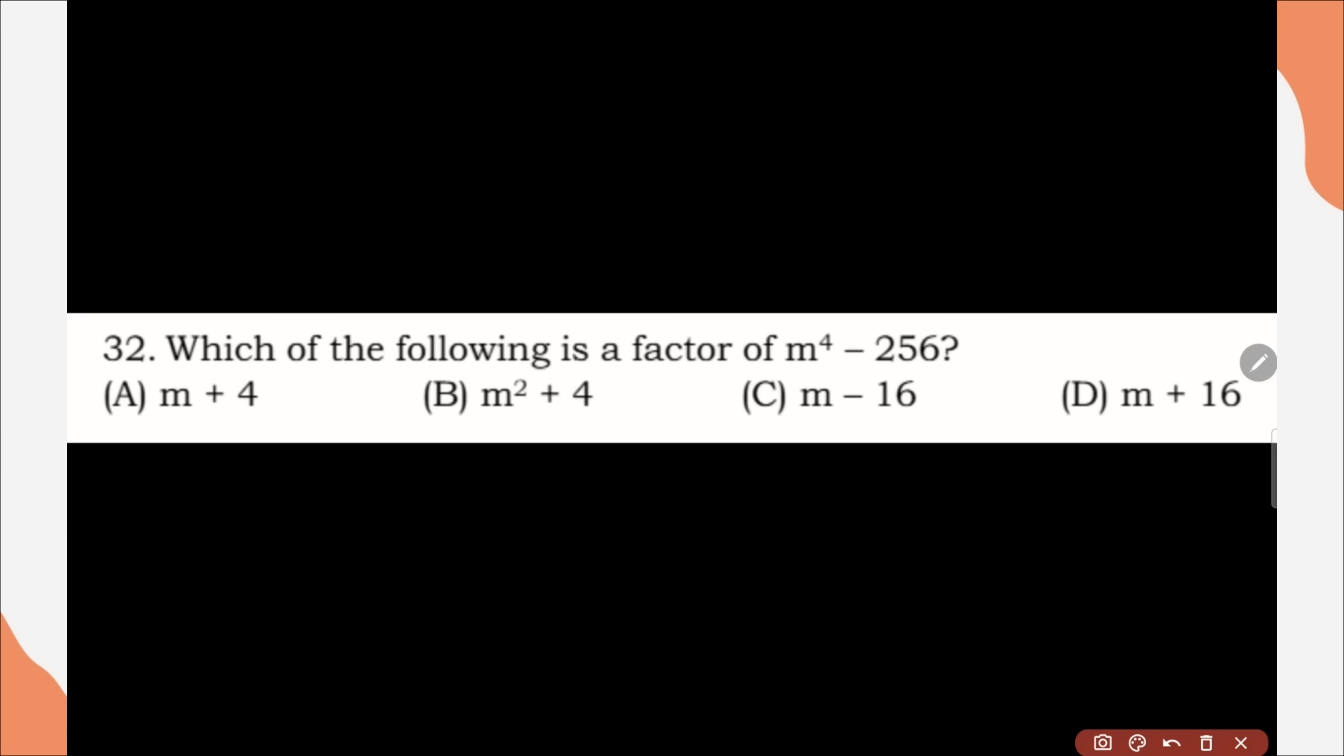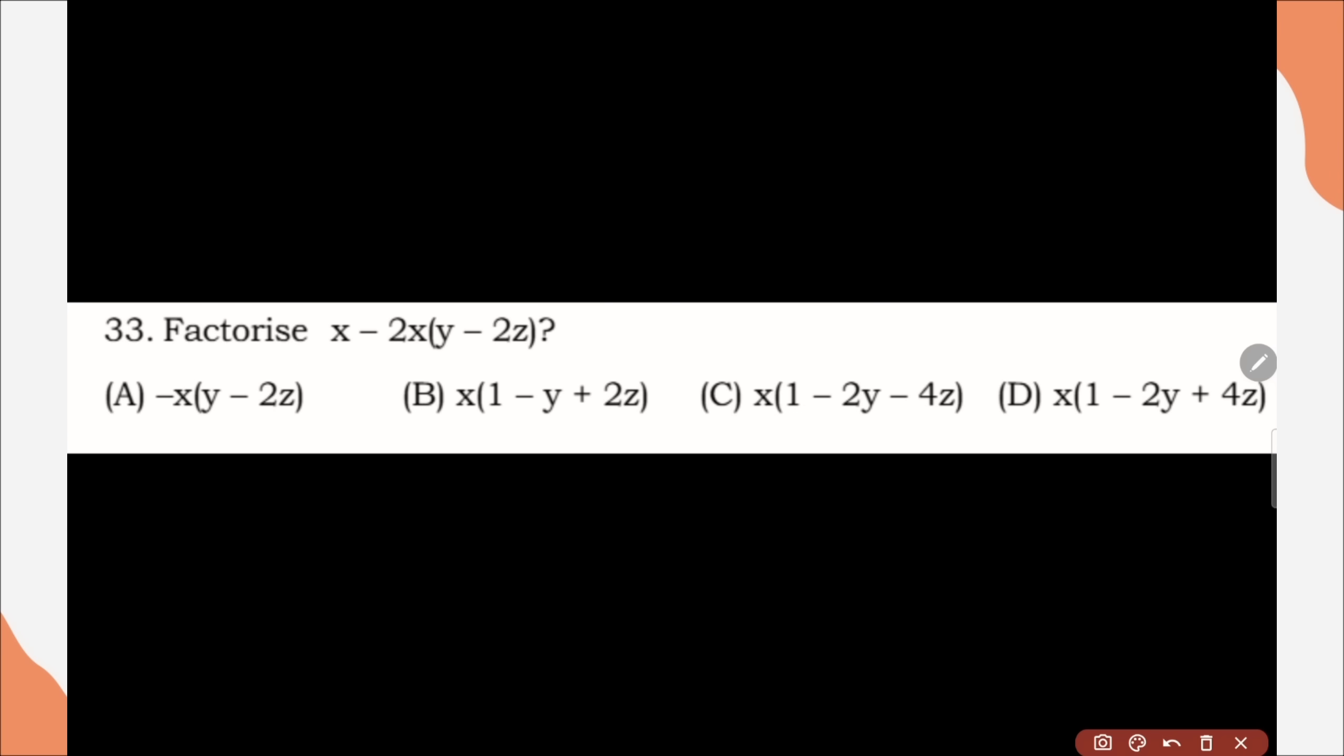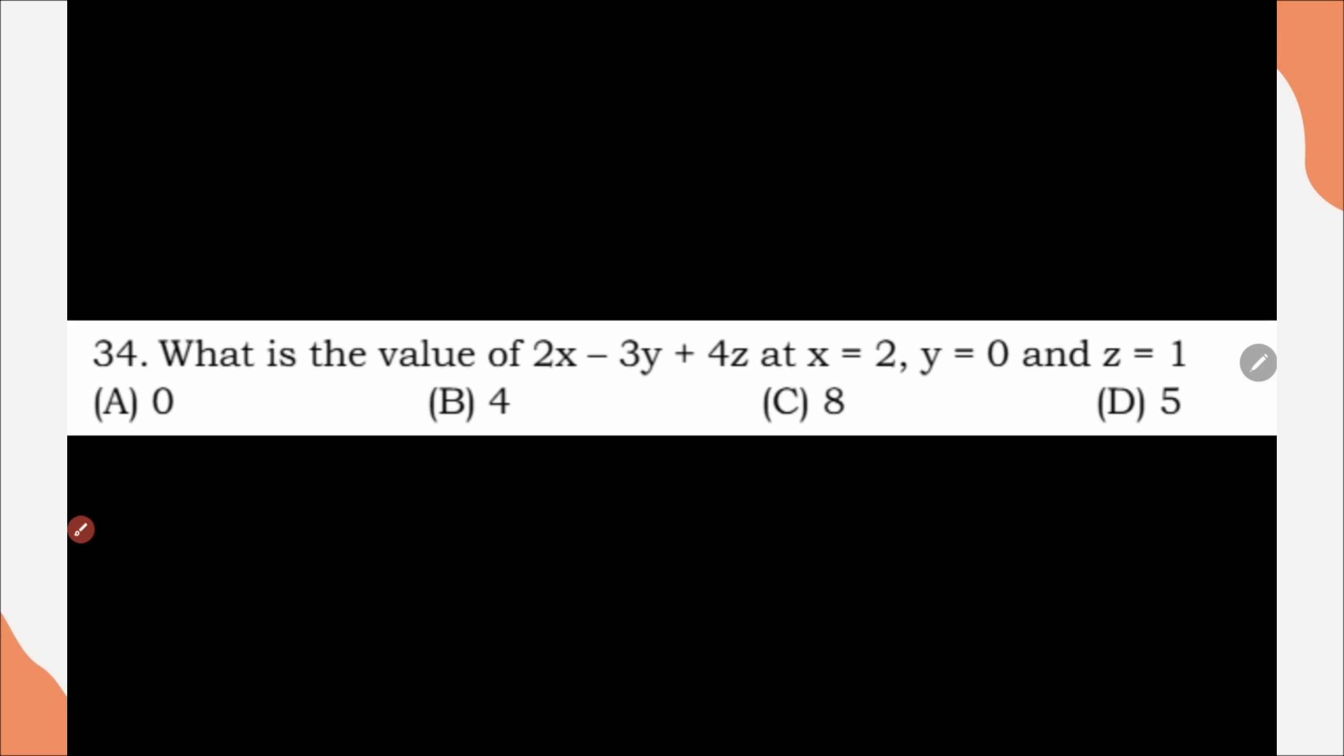Question number 32, which of the following is a factor of m to the power of 4 minus 256? Correct option is option A, m plus 4. Question number 33, factorize x minus 2x bracket y minus 2z. Correct option is option D. Question number 34, what is the value of 2x minus 3y plus 4z at x is equal to 2, y is equal to 0 and z is equal to 1? Correct option is option C, 8.